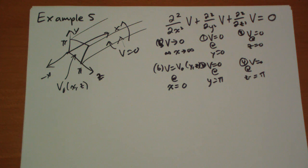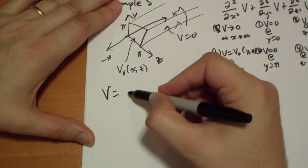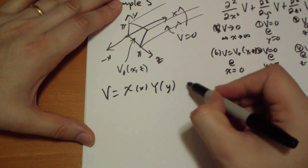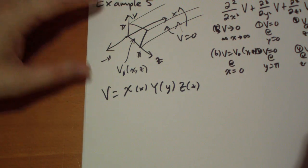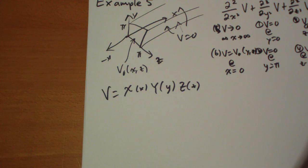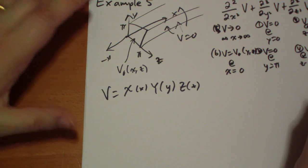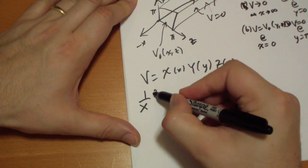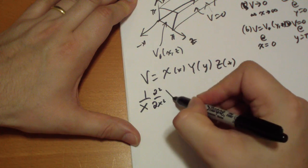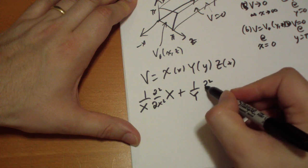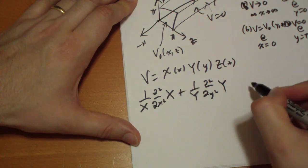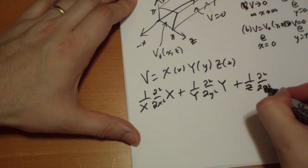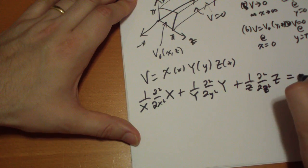So, we substitute for v is going to be x of x, y of y, and z of z. And when we plug that into Laplace's equation, we're going to end up with the same kind of situation where we plug it in and then divide by v. So, we get one over x, d squared by dx squared x, plus one over y, d squared by dy squared of y, plus one over z, d squared by dz squared of z. It has to equal zero.